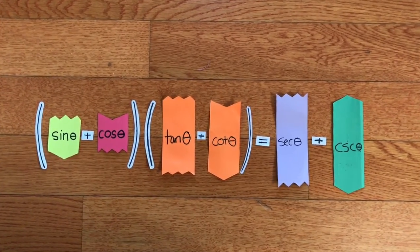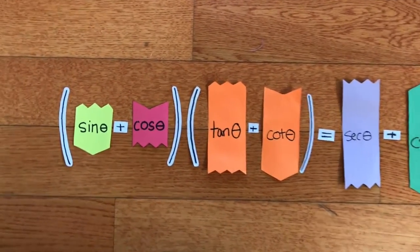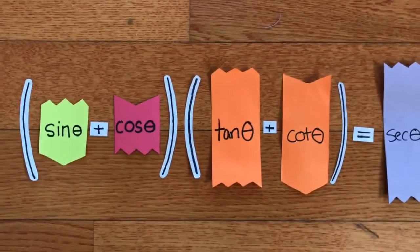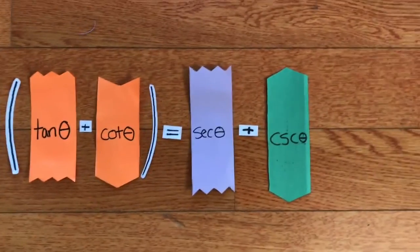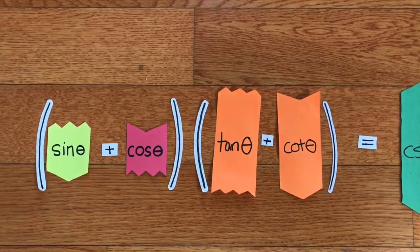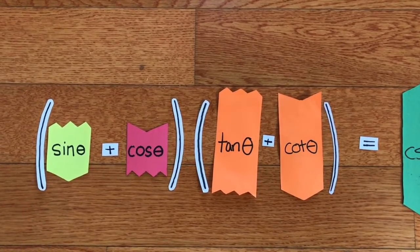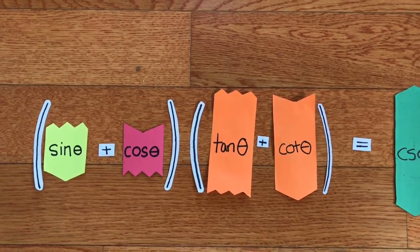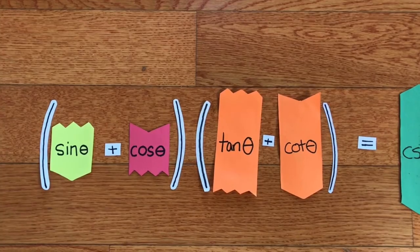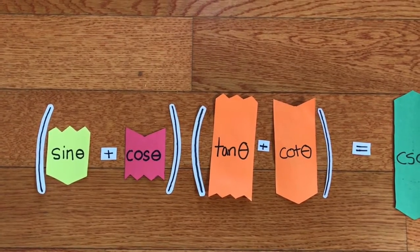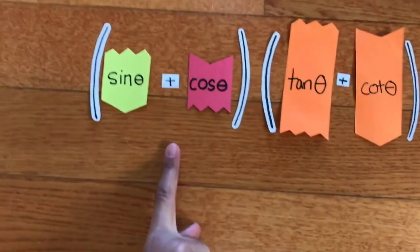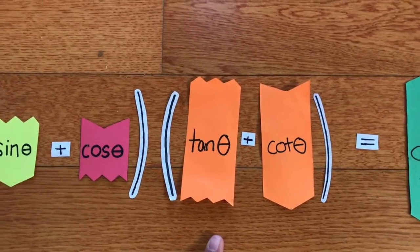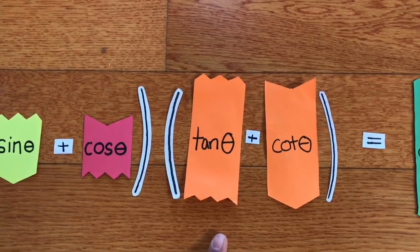We're going to use the left side of the equation because it seems more complicated than the right side. This proof will take around nine steps. The first step involves the distribution of the quantities (sine theta + cosine theta) and (tangent theta + cotangent theta).